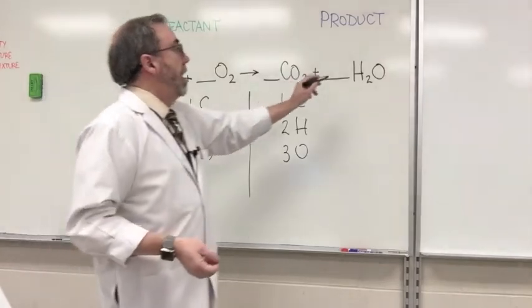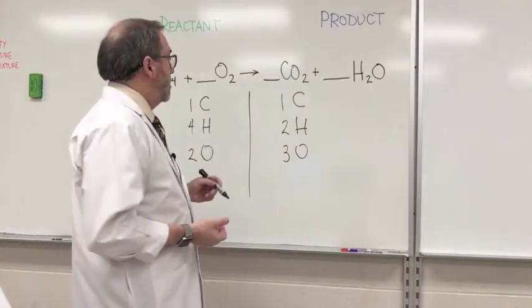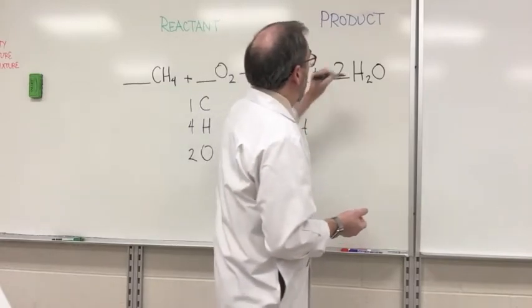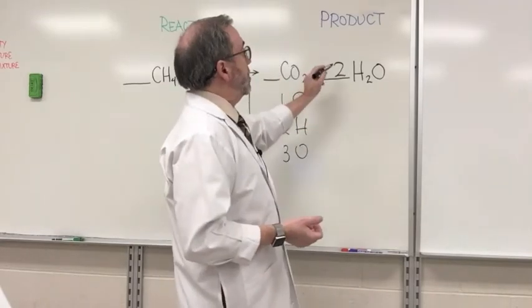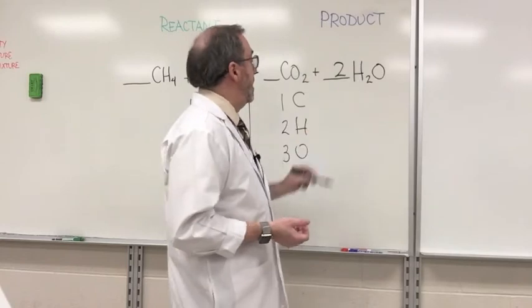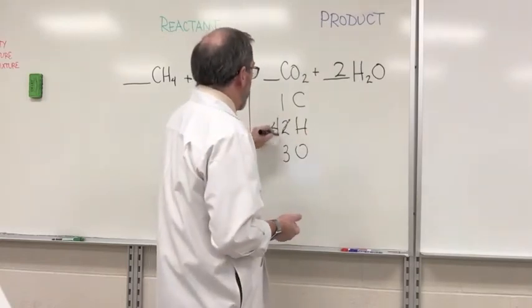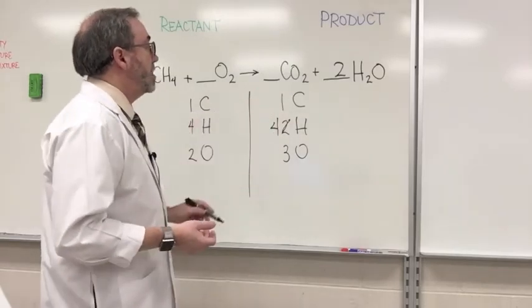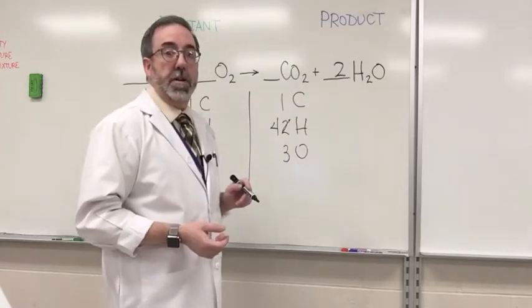The H's are not balanced. So we've got four over here, we've got two over here. What do we need to do? Well, we need to times this by two, so you put a coefficient there. This is two times two. This will give us our four H's. Fine and good. So now this is balanced, this is balanced, but now we messed up our O over here.